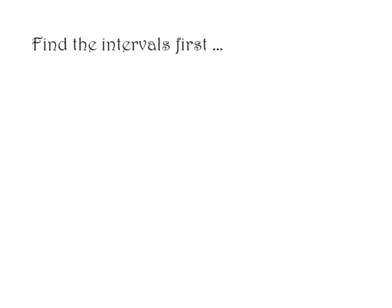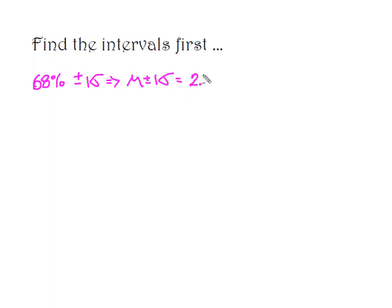In order to put this onto our curve, we're going to find our intervals first. Beginning with the first one the empirical rule gave us — 68% of our data is located within one standard deviation from the mean. Starting at the mean of 2.0 ounces and going plus or minus one standard deviation of 0.5 ounces, that gives me an interval of 1.5 to 2.5.